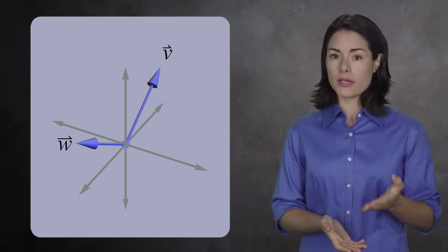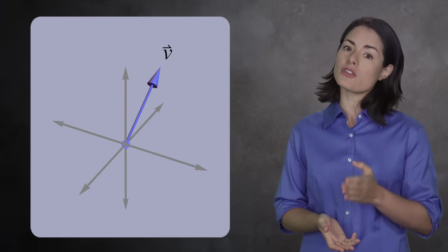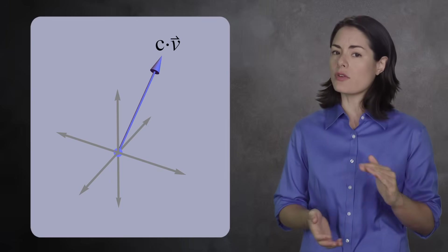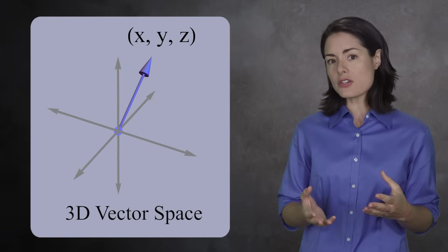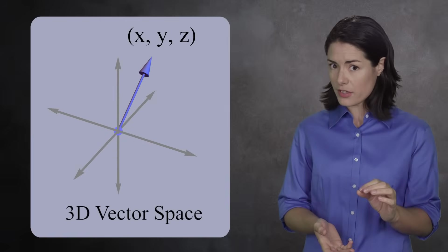Like before, if you add two vectors in three-dimensional space, you'll get a third vector. And again, you can scale vectors by multiplying the coordinates by any real number. All of these vectors form a three-dimensional vector space, because it takes three numbers to describe each vector.